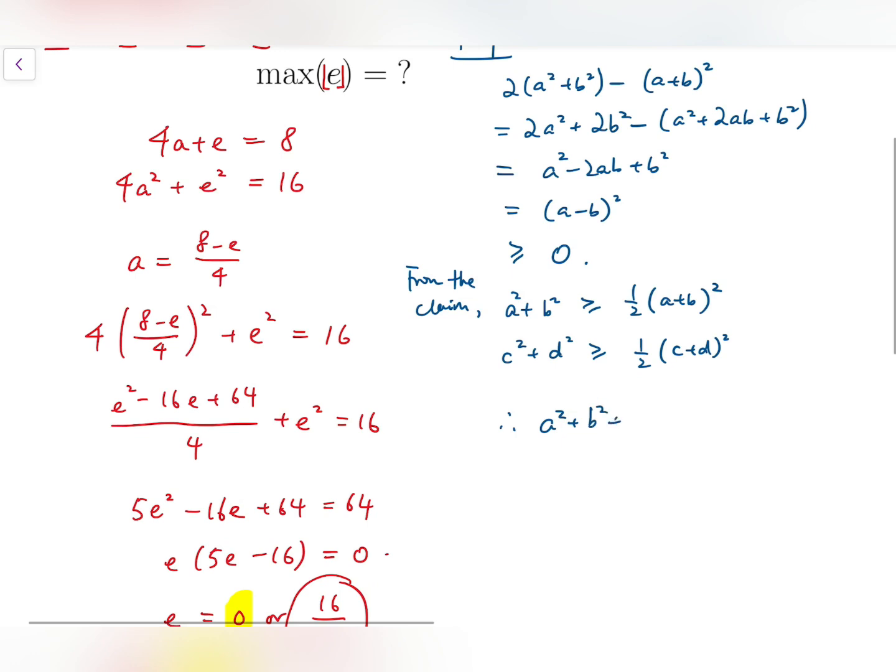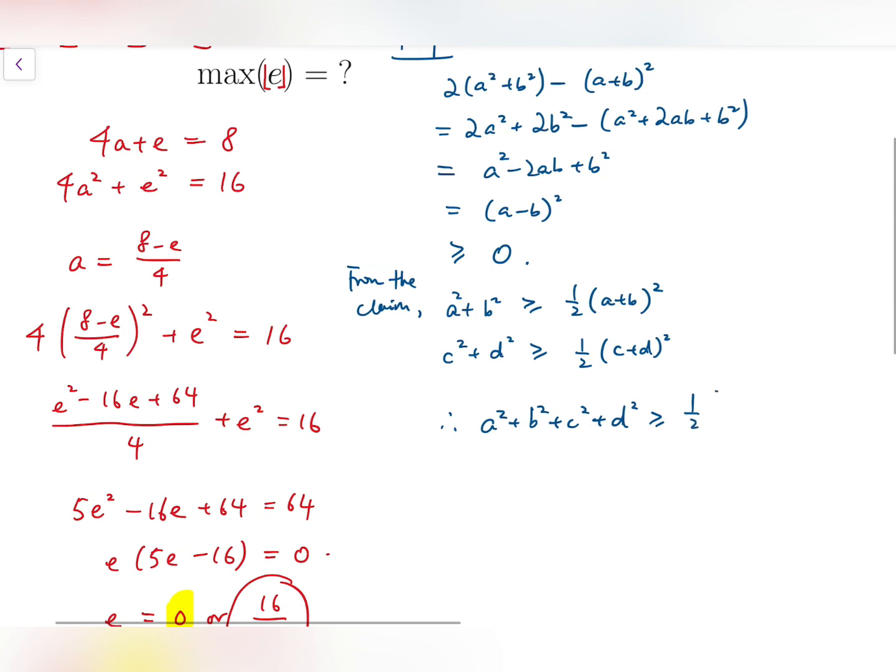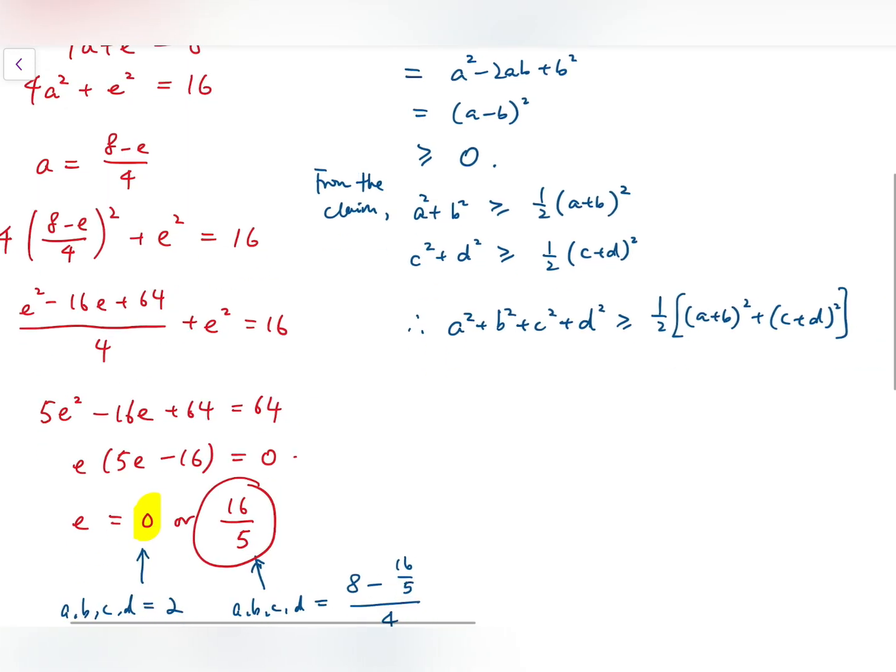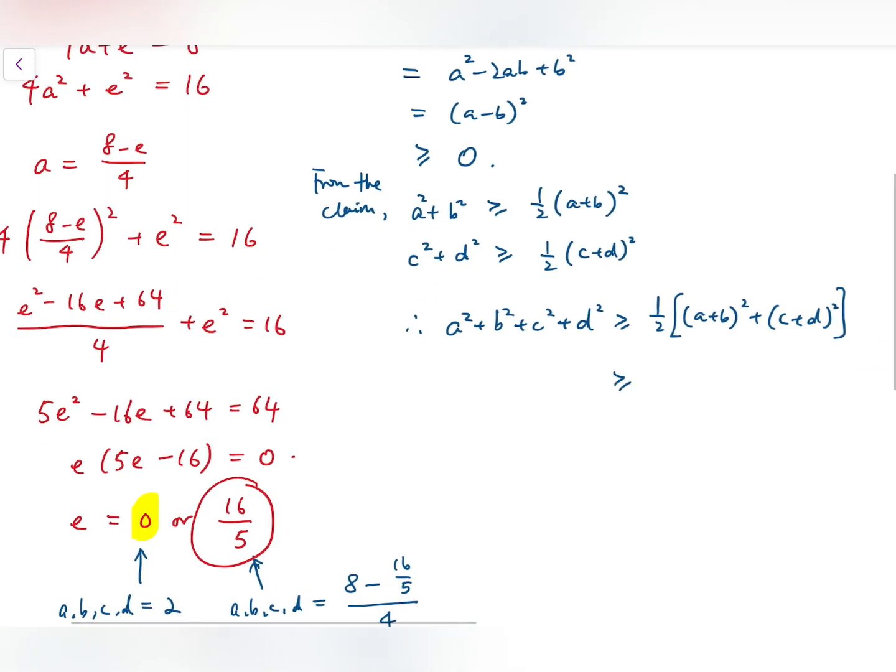So therefore, I can even say, by adding the two inequalities, we have one half of A plus B squared plus C plus D all squared. Now that is also greater than or equal to half of one half of A plus B plus C plus D all squared. Using the claim again.